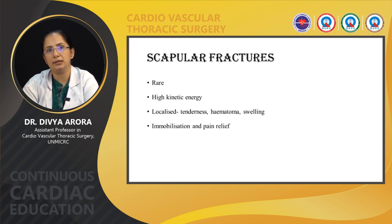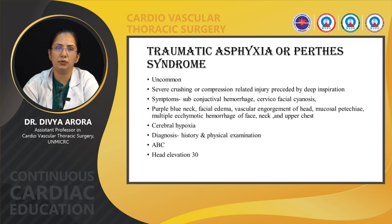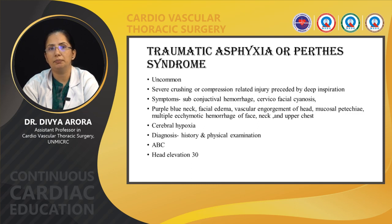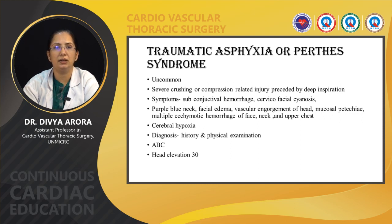Scapular fractures are rare, requiring high kinetic energy. The patient usually presents with localized tenderness, hematoma, and swelling; immobilization and pain relief is the main management. Traumatic asphyxia, or Perthes syndrome, is very uncommon and is mainly caused by severe crushing or compression injury preceded by deep inspiration. The patient can have subconjunctival hemorrhage, cervicofacial cyanosis, purple-blue neck, facial edema, vascular engorgement of the head, mucosal petechiae, multiple ecchymotic hemorrhages of the face, neck, and upper chest, and even cerebral hypoxia. Diagnosis is based on history and physical examination. The goal remains ABC — establishing airway, breathing, and circulation — with head elevation of 30 degrees.